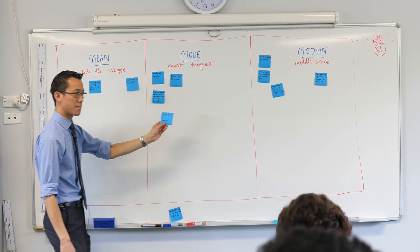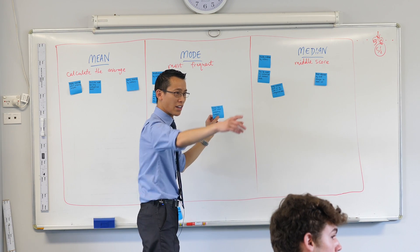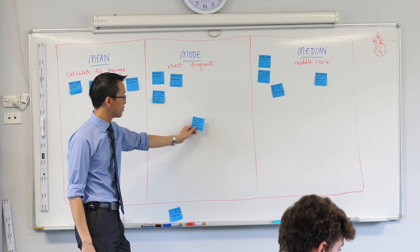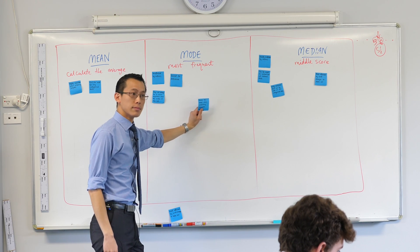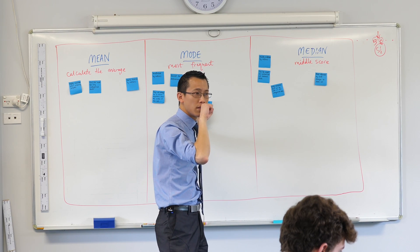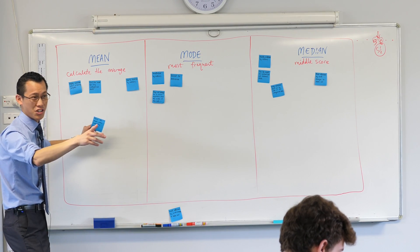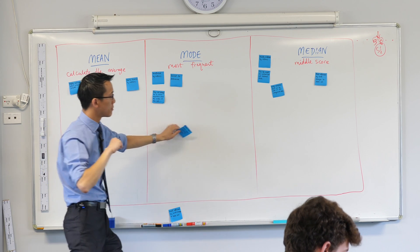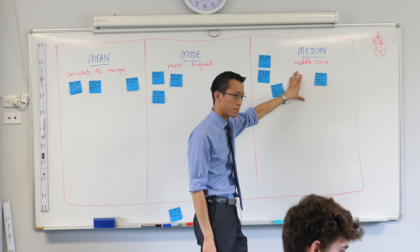The median is listed in order — it has to be — whereas mode doesn't really have to be; you just have to pick out the most common number. If you take a representative sample for the median, the median should be the same if it's representative, whereas if it's a mode-type sample, then there's slightly more likelihood that it could change.